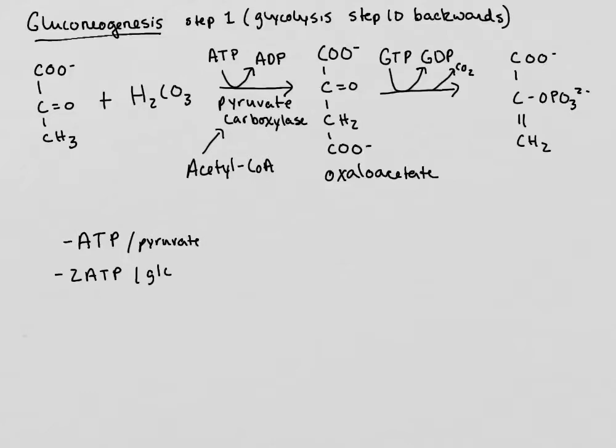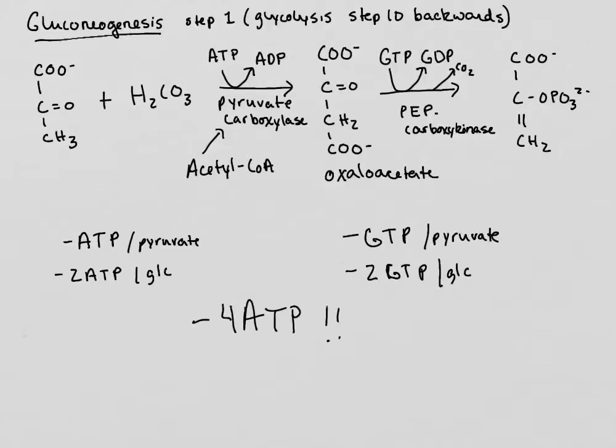This also requires the investment of an ATP equivalent in the form of GTP. The enzyme that catalyzes this step is extremely famous. It's called PEP carboxykinase. Let's make sure we completely balance our bank account. So now we have another ATP equivalent in the form of GTP that is invested. And if we're considering this in terms of per glucose, it's two, the equivalent of two GTP per glucose. So essentially, it's like we've already invested the equivalent of four ATP at this point after only one bypass reaction to get us back just literally one step.